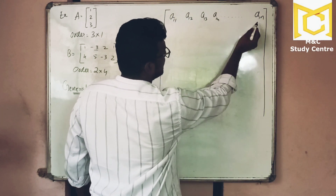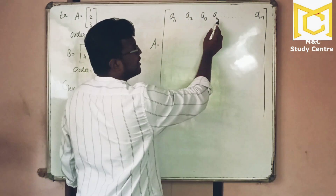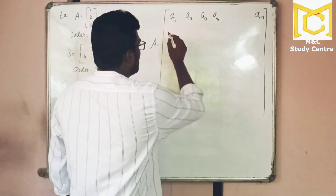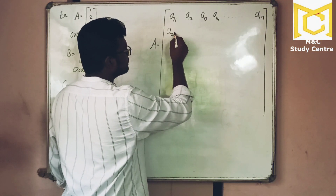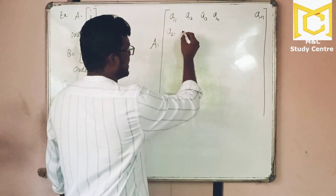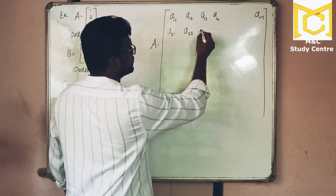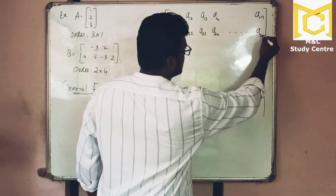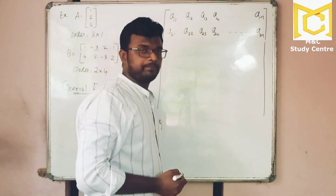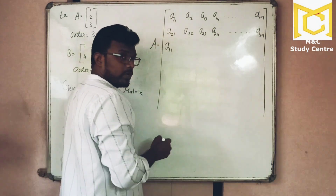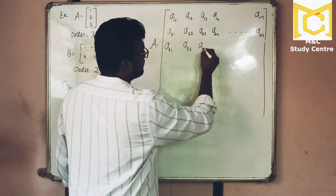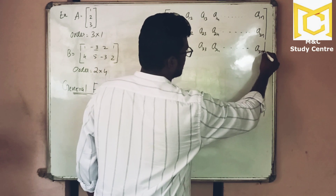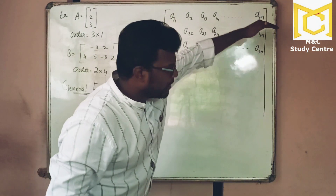Going to the second row: the element positions are A₂₁, A₂₂, A₂₃, A₂₄, and it goes on to A₂ₙ. Going to the third row: A₃₁, A₃₂, A₃₃, A₃₄, and it goes on to A₃ₙ. You continue for each row in this way.